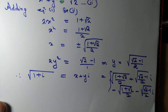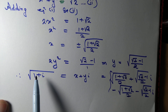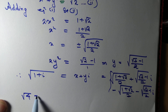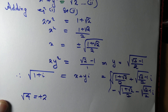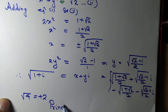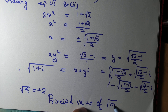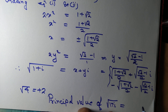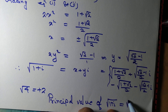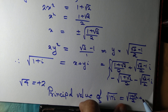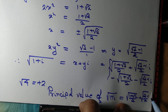Some may insist that, just as √4 = 2 (only the positive value), we define a principal value for √(1+i). The principal value of √(1+i) is the positive case: √((1+√2)/2) + i·√((√2-1)/2).